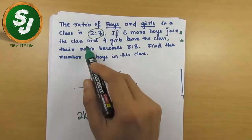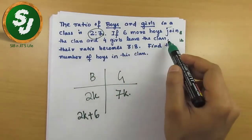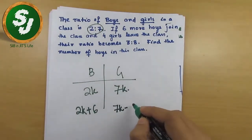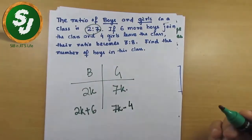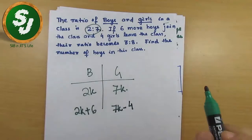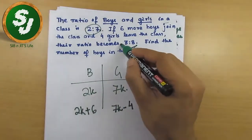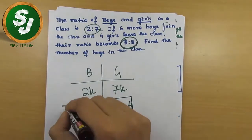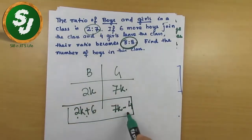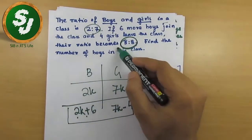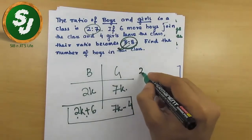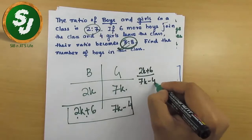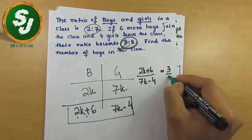If 6 more boys join the class and 4 girls leave the class — 'leave' means subtraction — so girls become 7k minus 4. After this scenario, the ratio becomes 3 is to 8. So the equation is: (2k + 6) / (7k − 4) = 3 / 8.